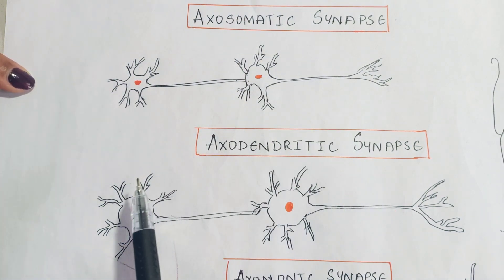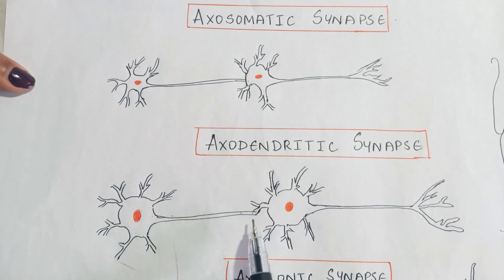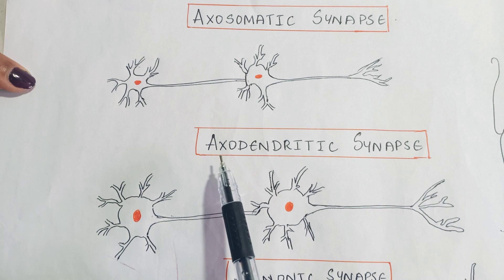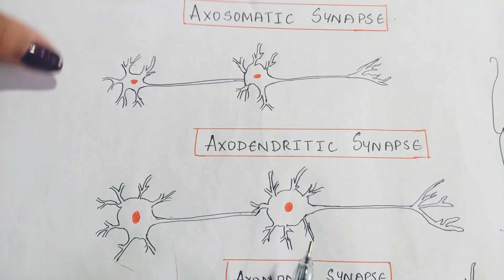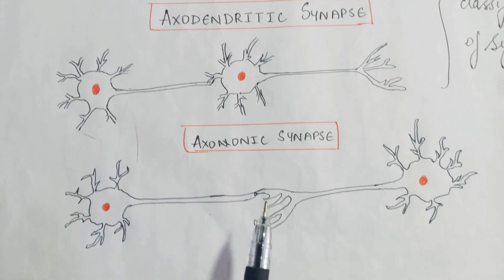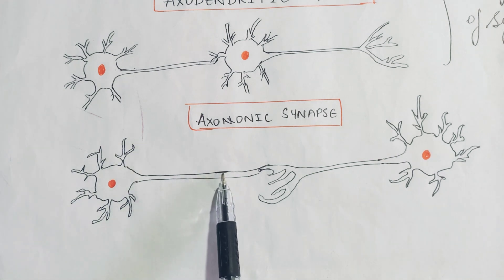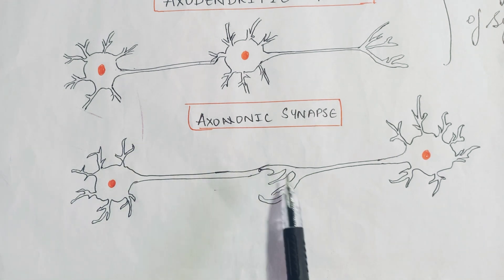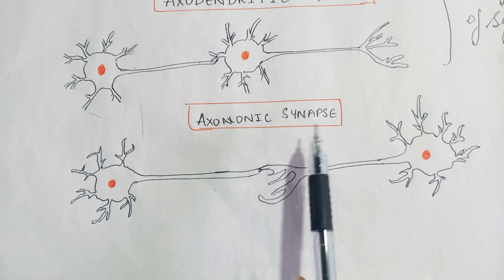Next, the axon of one neuron is in contact with the dendrite of another neuron — hence it is called axodendritic synapse. Third, the axon of one neuron is in contact with the axon of another neuron — hence it is called axoaxonic synapse.